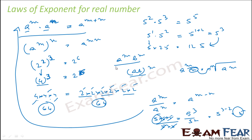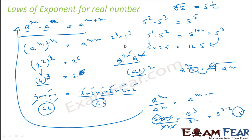When two different bases have the same exponent, you can combine them: a to the power m times b to the power m equals a times b, all to the power m. For example, 2 to the power 3 into 1 to the power 3 is nothing but 2 into 1, to the power 3 — this equals 8, and calculating separately also gives 8. Please pause and note down all these rules.